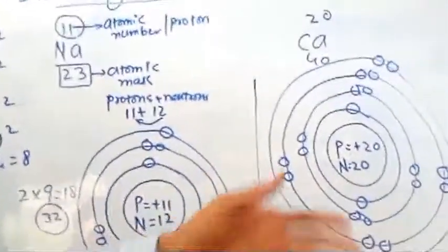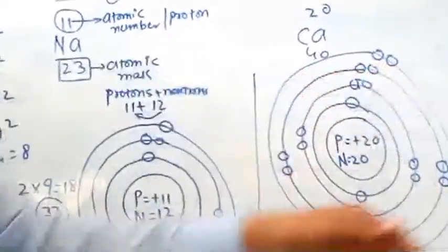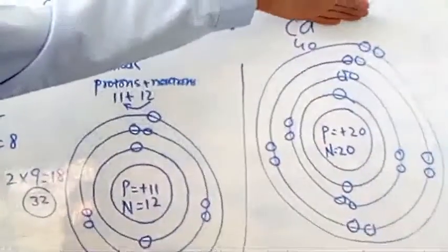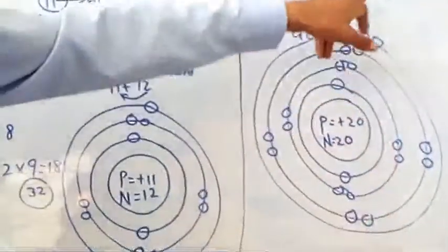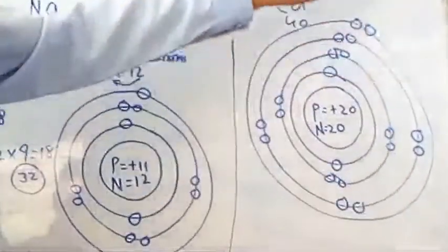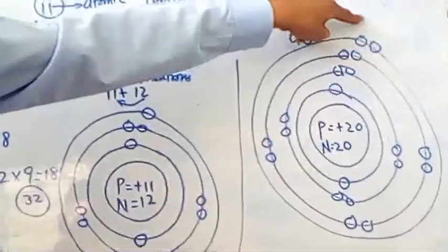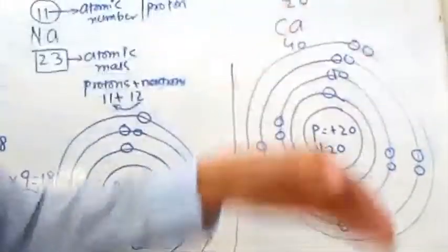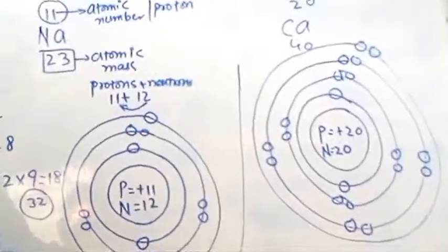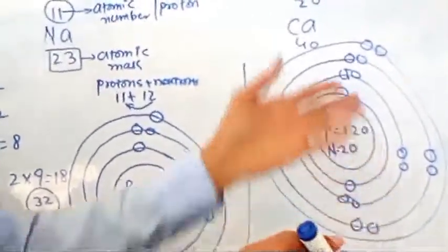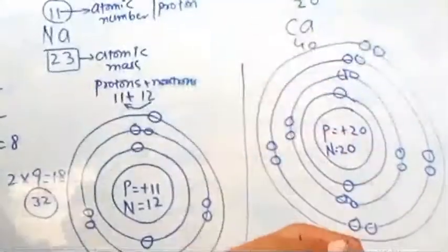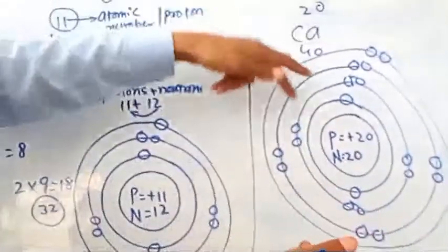Similarly, aluminum is in the third group, carbon in the fourth group, nitrogen in the fifth group, oxygen in the sixth group, and chlorine in the seventh group. Each atom has electrons in its outermost shell equal to its group number — chlorine has 7, carbon has 4, nitrogen has 5, and boron or aluminum has 3. However, neon and helium have complete outermost shells — helium has 2 electrons and neon has 8 electrons in its outermost shell. This is the structure of the atom.